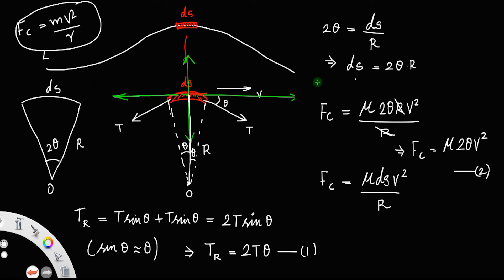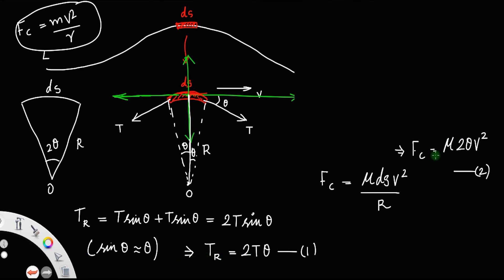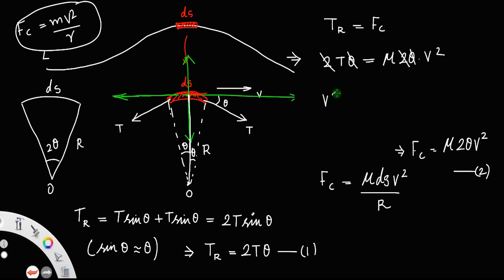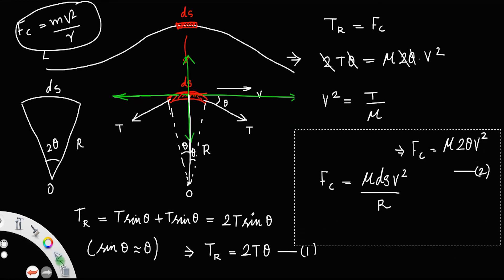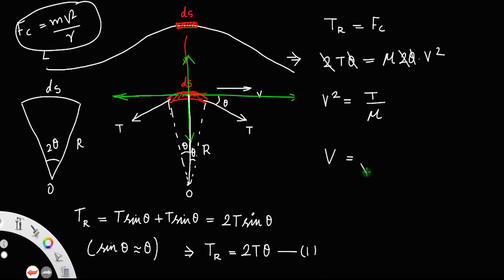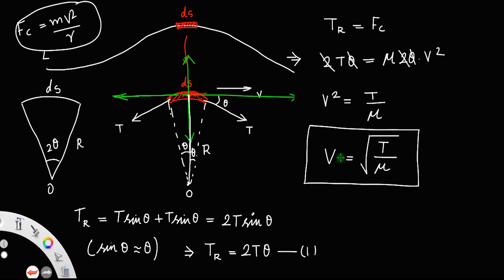Comparing equations 1 and 2, since the resultant tension provides the centripetal force, Tr = Fc, which gives 2Tθ = μ · 2θ · v². Cancelling 2 and θ from both sides, we get v² = T / μ, and therefore v = √(T/μ). This is the speed of a wave in a stretched string — velocity is directly proportional to the tension and inversely proportional to the linear mass density.